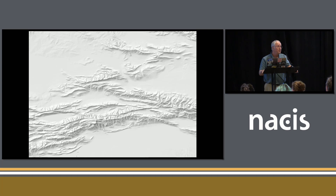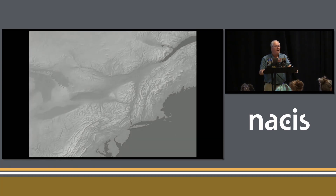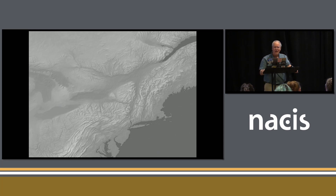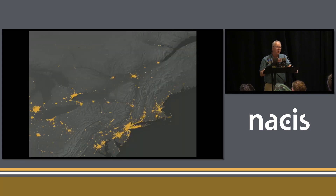This is the Gray Earth dataset. It uses localized hypsometric tints developed by none other than Daniel Huffman, sitting up here in the front row — thank you, Daniel. It combines the new Shader Relief and localized hypsometric tints. This is the light version. We also have a darker version — I know a lot of you like to have glowy data on dark backgrounds, so we have a dark version available so you could do these sorts of maps.